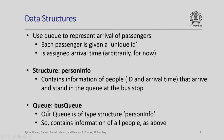Next we require a queue which we call the bus queue. Our queue is of the type structure person_info, because each person standing in the queue is represented by an artificial ID and an arbitrary arrival time. So the queue contains information about all the people as described.